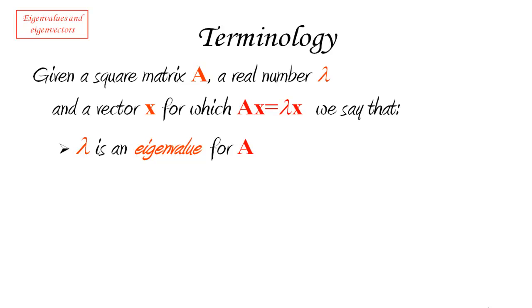So these special values, these characteristic values of the matrix, are called the eigenvalues of the matrix. And correspondingly, x is going to be an eigenvector for the matrix. It's going to be an eigenvector associated to that particular eigenvalue.